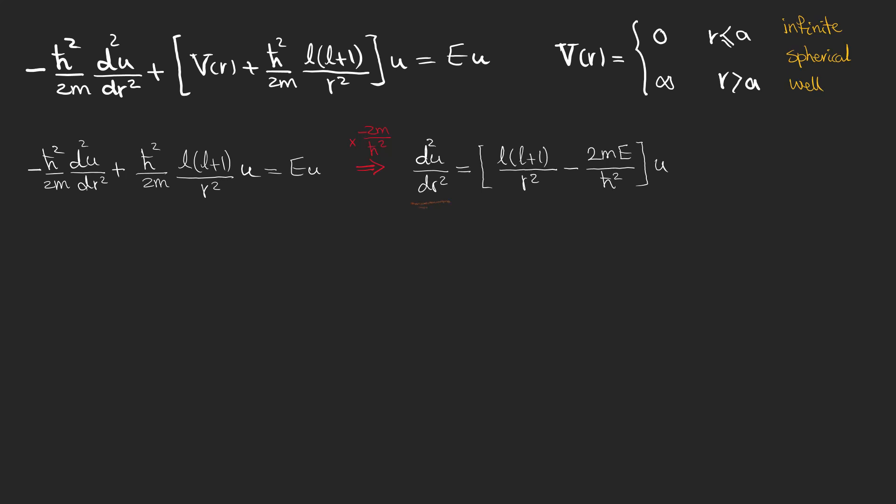we have the second derivative of the wave function on the left and the wave function with a coefficient on the right. It may remind you of some equations like this which have a really straightforward answer. But because of this term here, we get into trouble and can't easily solve this differential equation. So let's at least name this term k squared and rewrite the equation in which k is equal to the square root of 2m E over h-bar.